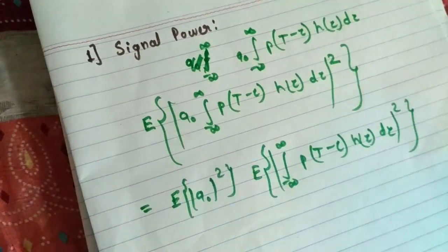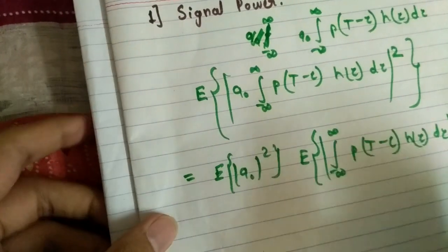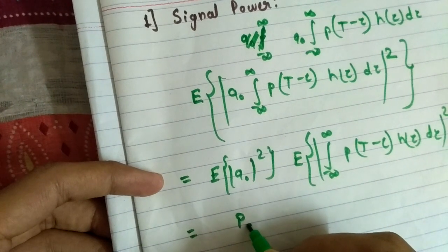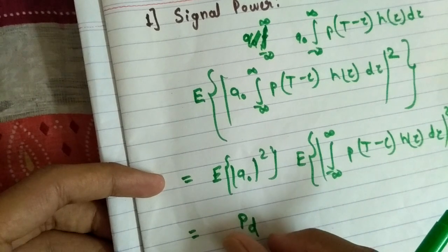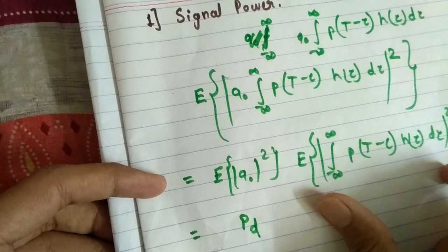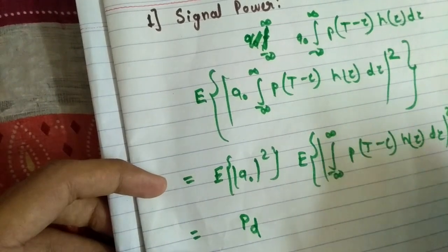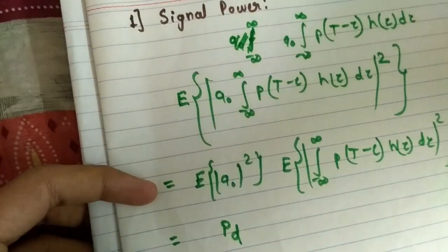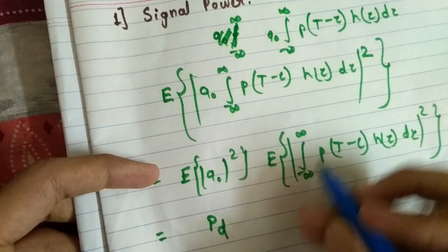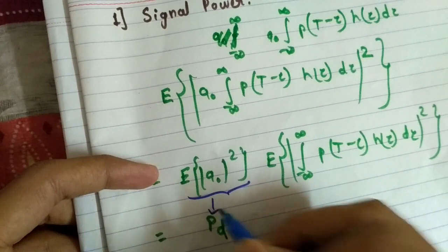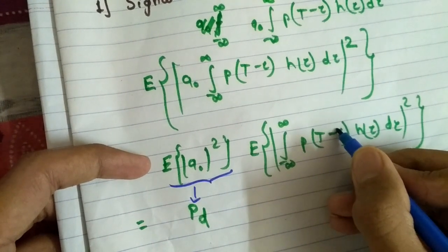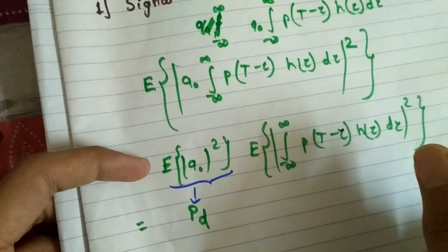So we have to calculate this. This is nothing but the power of the symbol data — let's say it is denoted by P_d. The remaining thing is this: we know that p(t minus tau) and h(tau) — we have just replaced this. Now p(t minus tau) and h(tau) are the key components here.